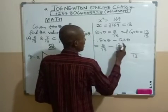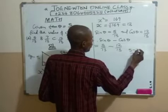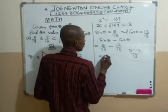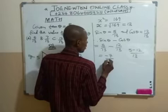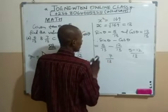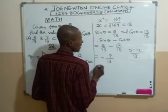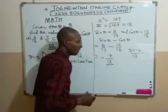The LCM is simply 13. And when I have 5 minus 12, is equal to minus 7. And we have minus 7 over 13. So, our answer here is equal to minus 7 over 13. Very simple.